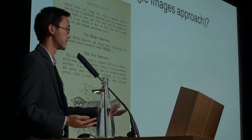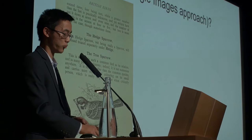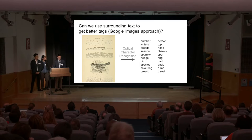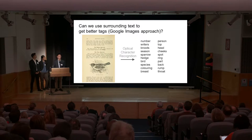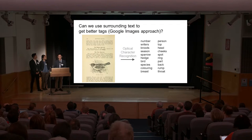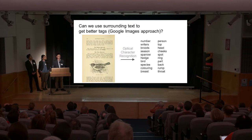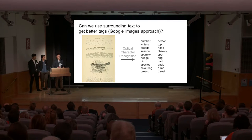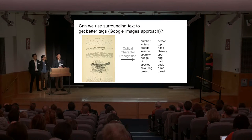We noticed that a lot of words are relevant — bird species, coloring — but a lot of words are not relevant. So we came up with a strategy called voting. The idea is that for every image we find 20 of the most similar images, take all the words surrounding those images, and have the images vote on which words are the most likely or most common. That should give you the tags that best describe the original image.